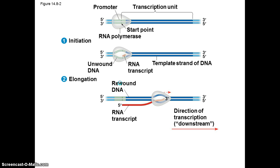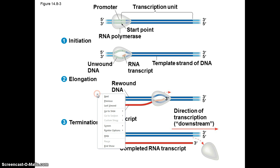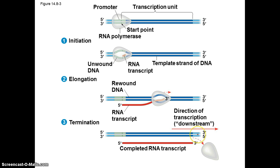The next step is elongation, where RNA polymerase uses the template strand to continue building the RNA transcript. When it reaches a sequence called a terminator, the RNA polymerase is released and you have a complete RNA transcript.